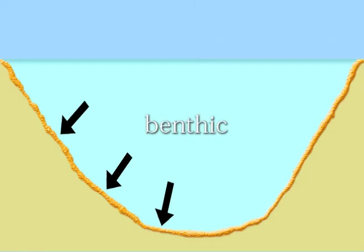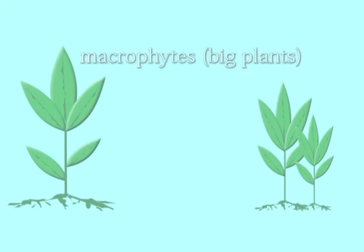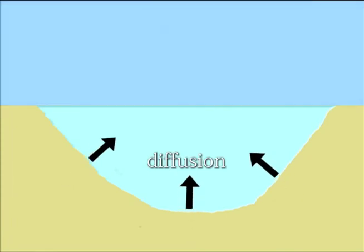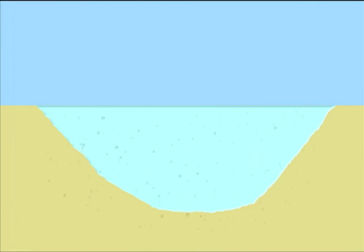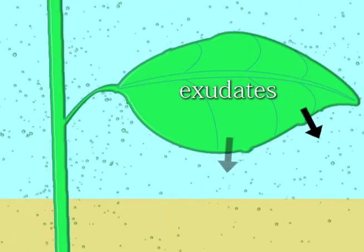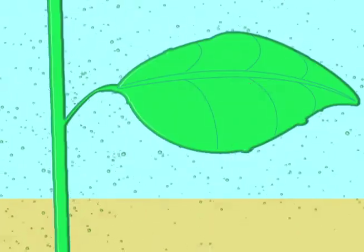In a healthy pond, there are three types of algae: benthic, periphyton, and phytoplankton. Macrophytes are big plants in our ponds that take out nutrients. Nutrients enter our ponds in several ways. One way is diffusion, where nutrients enter from the soil on the bottom leaching into our water column. There is another natural source of nutrients called exudates, where nutrients leave the macrophytes, escaping from their plant tissues, and enter into the water column.